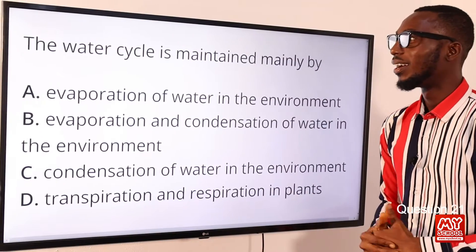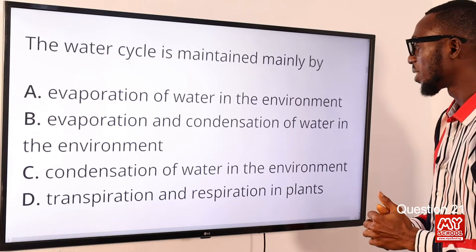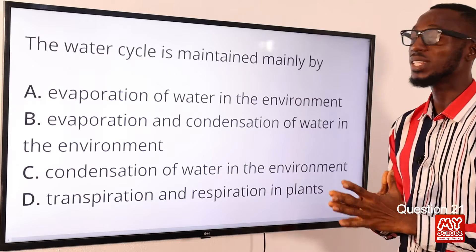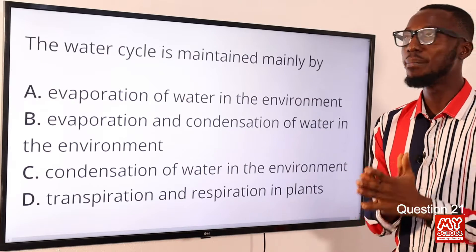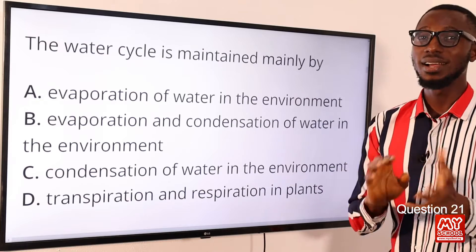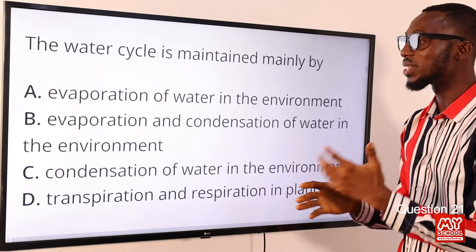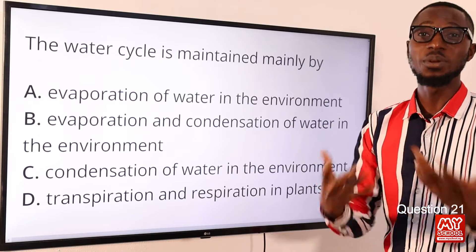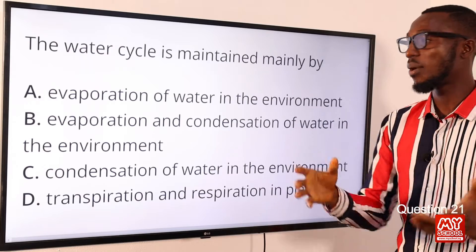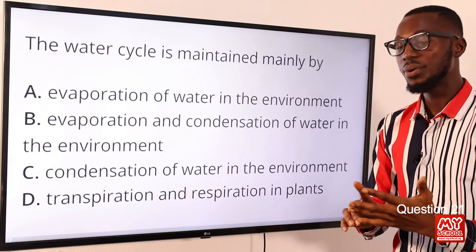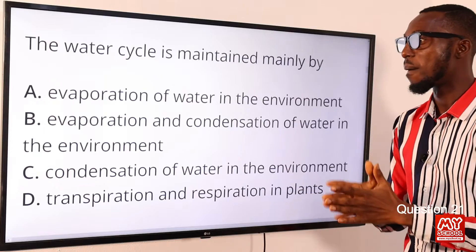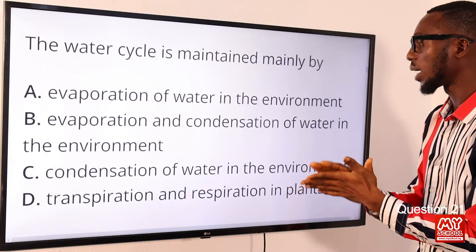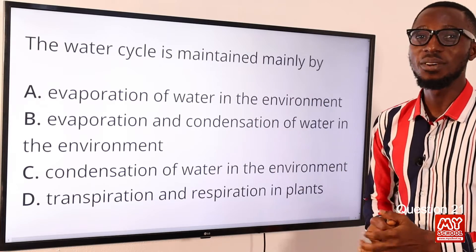Question 21. The water cycle is maintained mainly by evaporation and condensation of water in the environment. It is important that we are aware that water circulates majorly in the abiotic components of the environment. Whatever water enters the biotic component is still returned to the abiotic environment via transpiration, respiration, excretion, and decay. Option B is the correct option.